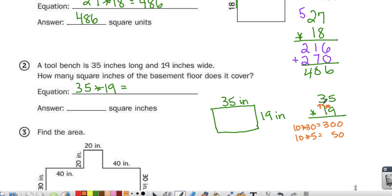Next, I would do 9 times 30, which is 270, followed by 9 times 5, which is 45. And I add those 4 up, I get 5, 16, and 6. 665 square inches.